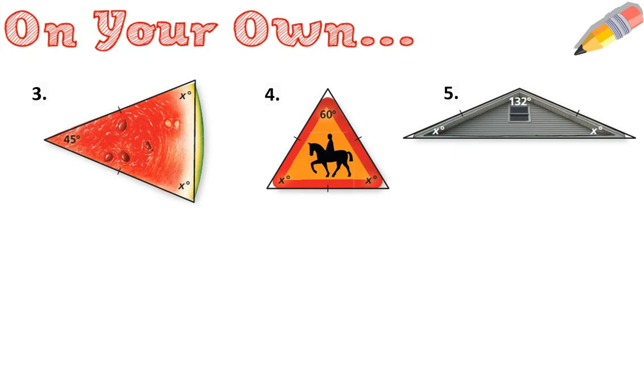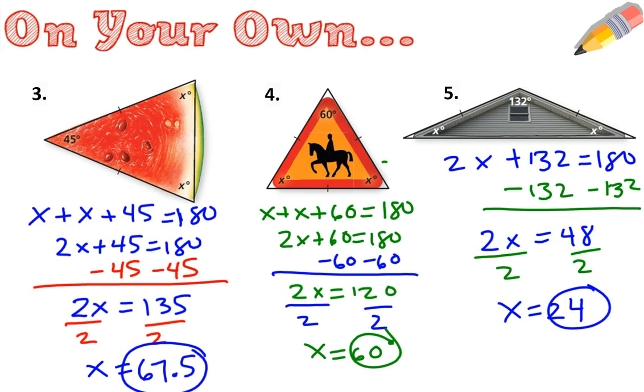All right, why don't you pause the movie and try three more? All right, let's check your answers. Did you notice that all three of these look like they're isosceles triangles? Except for this one. It actually has three congruent marks. That makes it equilateral. So I probably don't even need to do any math here. I already know that these are all going to be equal to 60, 60, and 60. Let's check your answers. How did you do?